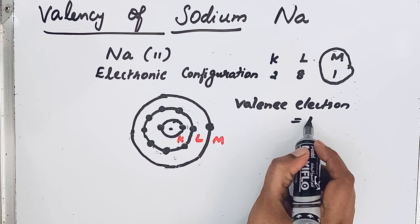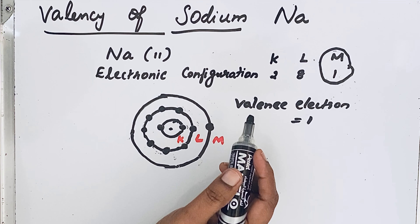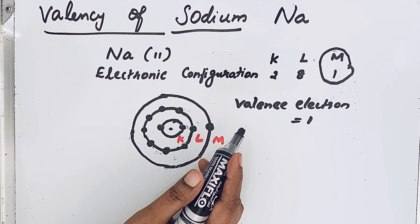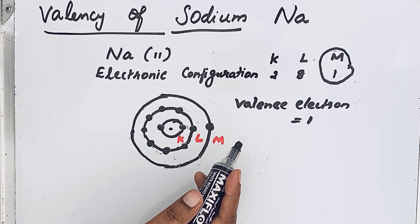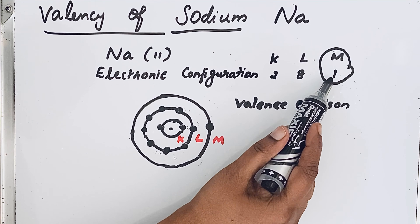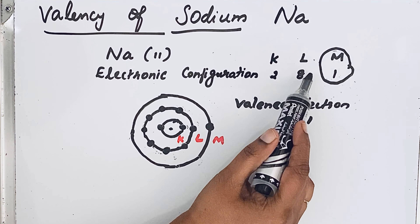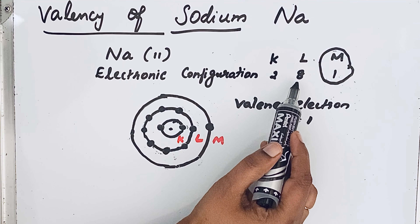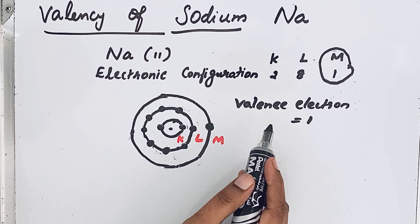Atoms combine with other atoms by gaining, losing, or sometimes sharing electrons — to get the octet configuration. Octet means 8, and that octet configuration gives stability to atoms. For sodium, only one electron is present in the outer shell, so if this one electron is lost, sodium can easily get the octet configuration. That is why sodium loses electrons to achieve its octet configuration.